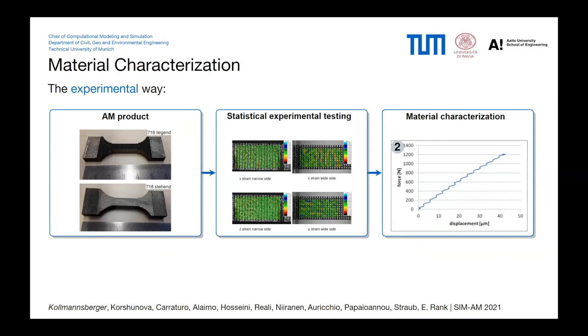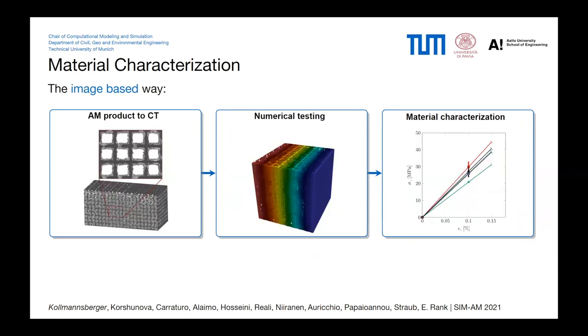However, what you can do with these kind of products is you want to have a characteristic material property and what you can do is you can produce a bunch of them, do statistical and experimental testing, and then come up with a material characterization. An alternative way that is less expensive and likely faster is an image-based way. So you produce parts, you CT scan them, then you can do numerical testing without destroying the actual part, and from that come to a material characterization.